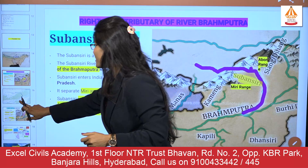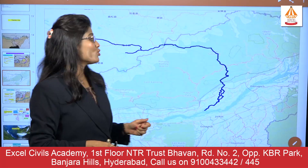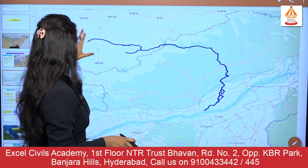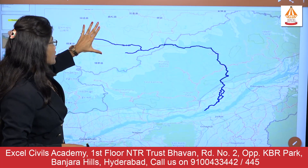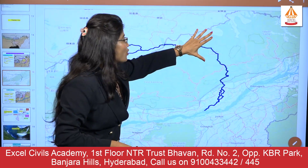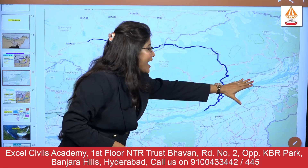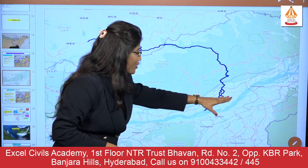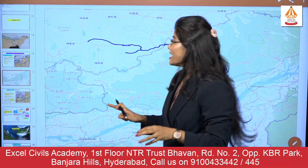Through Google Maps we can also trace the Subansiri flow. It originates in the Tibetan Plateau, flows through upper Subansiri and lower Subansiri, and then confluences with the river Brahmaputra after the region of Jurat.